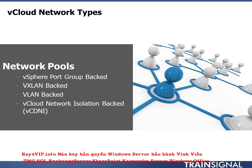Other than the vSphere port group-backed network pool, all other network pools require a distributed switch. Realistically, you're going to have at least enterprise licensing to do vCloud because it requires DRS — distributed resource scheduler. But you're most likely going to have enterprise plus, because not having a distributed switch really kills a lot of these networking constructs. That's why you're pretty much going to have to choose a distributed switch anyway — you can use a standard switch only for the vSphere port group-backed; everything else requires a distributed switch.